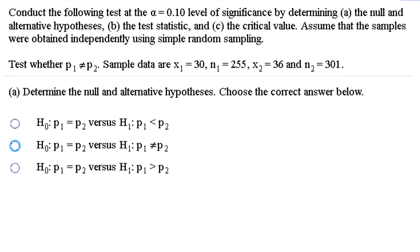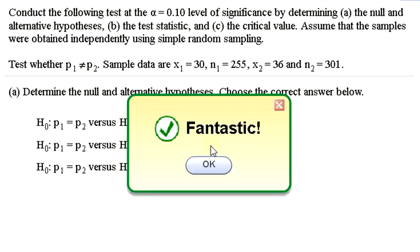So this problem, we want to conduct the following test at an alpha equals 0.10 level of significance. We're given some sample data from two samples of sizes 255 and 301. We've got 30 people out of the first sample, 36 out of the second, said yes to some arbitrary question. So the null hypothesis would be that the two population proportions are the same versus the alternative that the two population proportions are different.